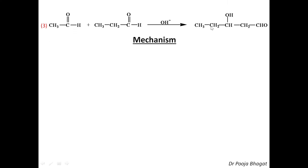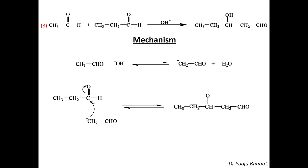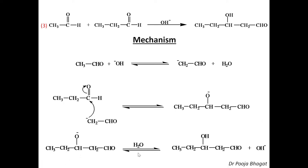Let us see the third reaction. In this aldol, you can see that this carbonyl carbon has oxygen attached here. The mechanism: once you take acetaldehyde and base, the alpha hydrogen is abstracted to give this ion. This ion then reacts with the propanol — the negative charge attacks on the carbon, and the double bond shifts towards the oxygen. You get this structure, and then this extracts a proton from the water molecule to give this aldol. Here, the acetaldehyde or ethanol is behaving as a nucleophile, and the carbonyl carbon of the propanol is acting as an electrophile.